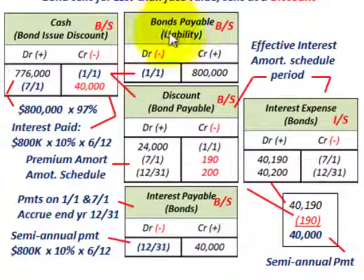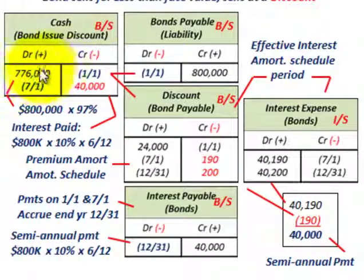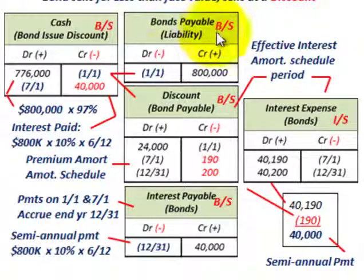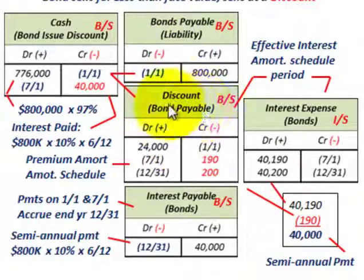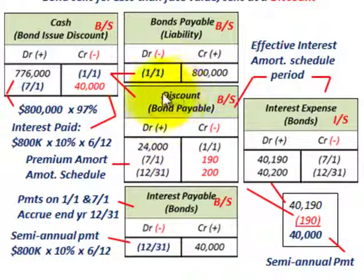Now let's look at how we'd record this. When we issued the bond, we debit the cash account for $776,000 — we received only $776,000, which was $800,000 times 97%. On 1-1, we record a bonds payable liability on our balance sheet, crediting it for $800,000. When a bond is issued at a discount, we set up a contra account to bonds payable. To balance, we debit the discount on bonds payable account for $24,000.